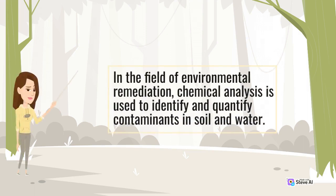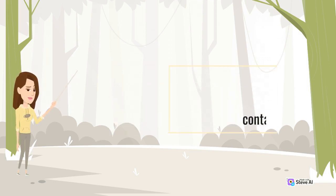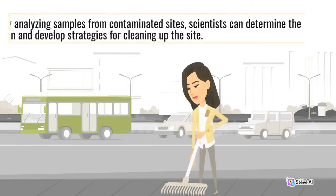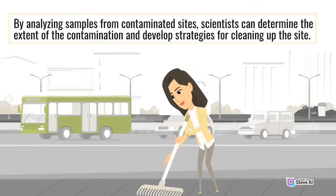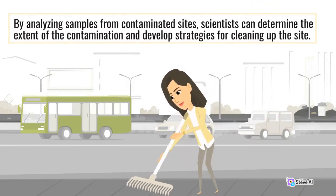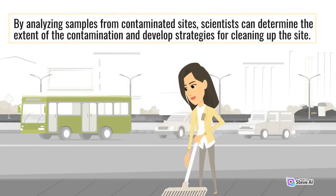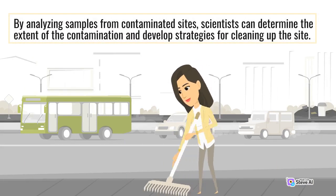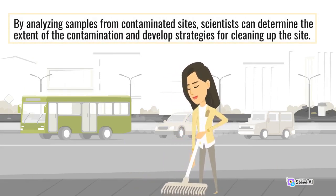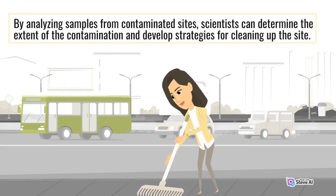In the field of environmental remediation, chemical analysis is used to identify and quantify contaminants in soil and water. By analyzing samples from contaminated sites, scientists can determine the extent of the contamination and develop strategies for cleaning up the site.